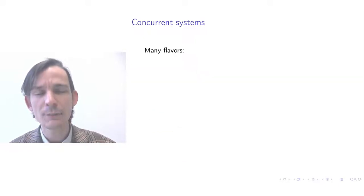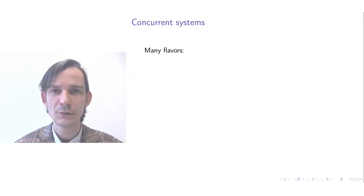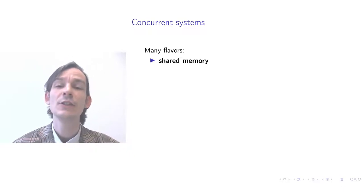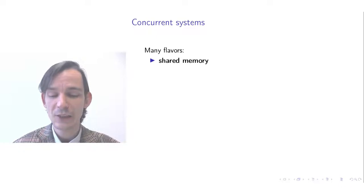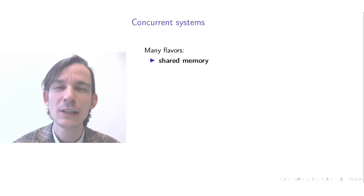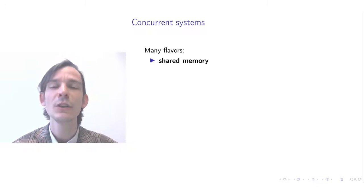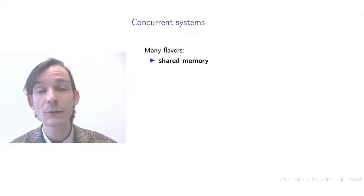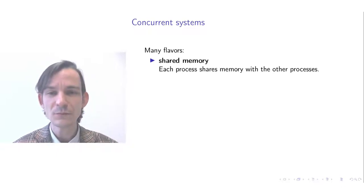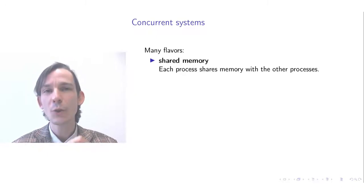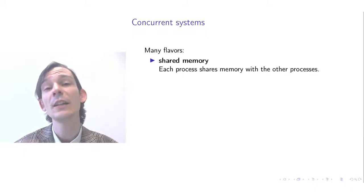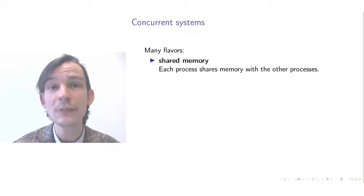There are many different flavors of concurrent systems. The most important one in this video is shared memory concurrent systems. In shared memory, whenever we have multiple processes — each with their own control point, call stack, and local variables — they share among all of them the main memory. So global variables in a program are shared among all processes. One process can modify this shared memory and this modification is then visible to all other processes, allowing processes to exchange information or influence each other.